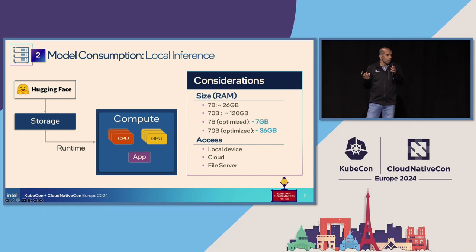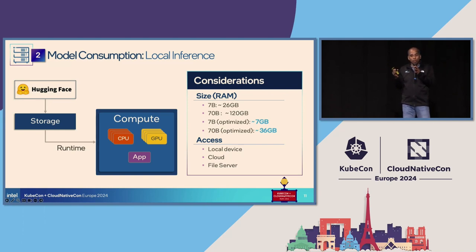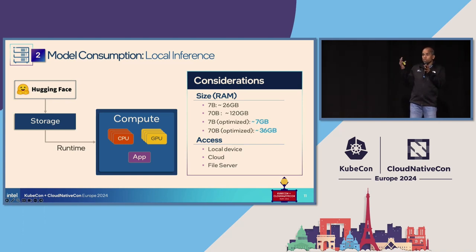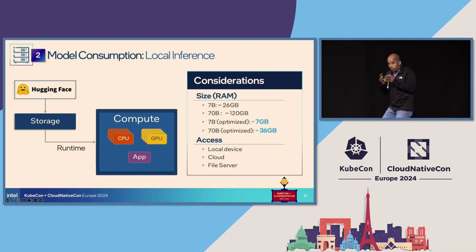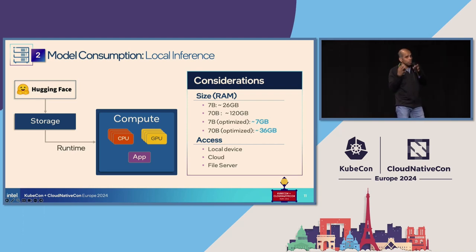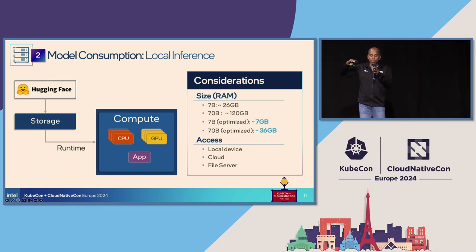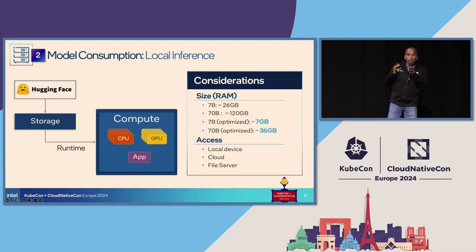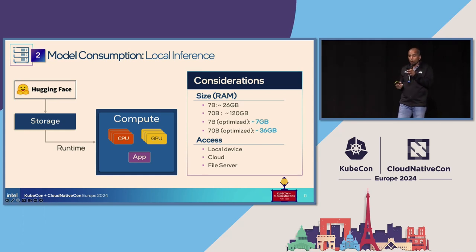If you use a local model downloaded from HuggingFace, there are two elements to consider. First is storage — a 7-billion-parameter model is about 30 gigabytes and needs to be stored on an NFS server, EFS, or similar. Second is compute capacity: CPU or GPU for running the model alongside your app. You could run a full 26-gigabyte model or an optimized 7-gigabyte version. Storage and runtime capacity all need to be planned and scaled.